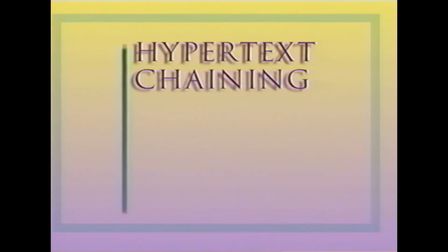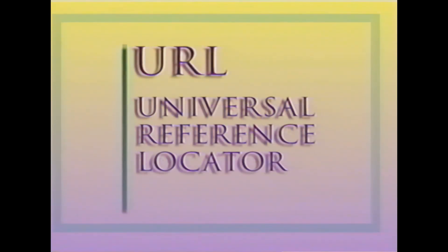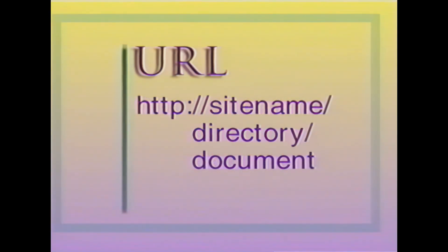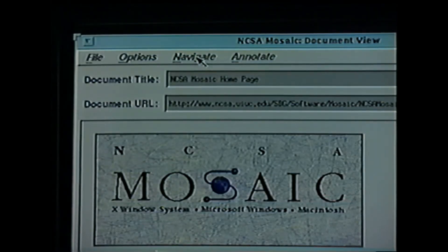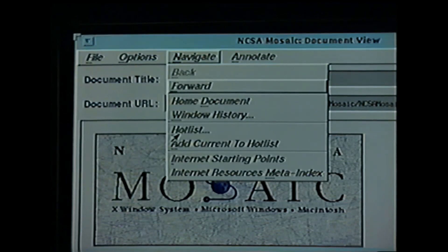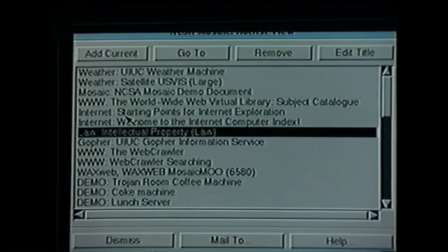Chaining from one document to another via a hypertext link can get somewhat tedious. So Mosaic has a hot list in which you can store the URL — that is, the universal reference locators — that describe the location of your favorite documents out on the World Wide Web. I'm going to use the hot list to go over to one of the intellectual property pages on the World Wide Web. This happens to be on a system in Austin, Texas, although I don't really need to know that other than to tell you for the purposes of this demonstration.